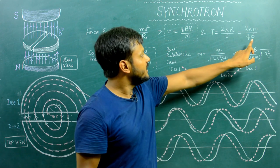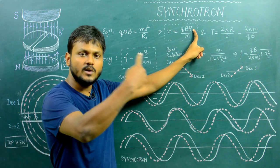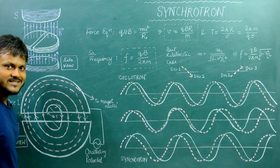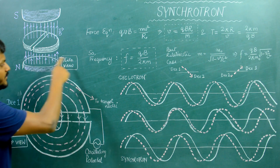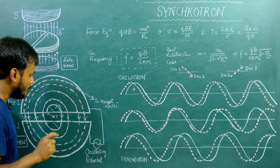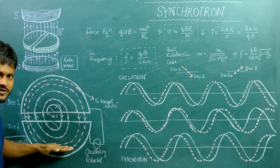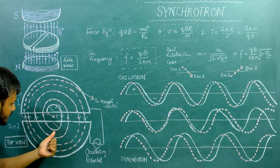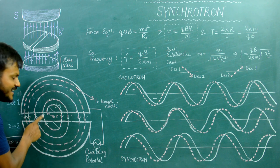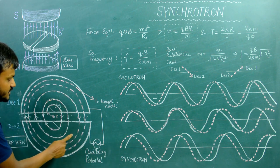The time period of revolution is a constant, depending only on the magnetic field, charge, and mass of the particle. As velocity increases, the radius of revolution also increases — this is why the particle's path spirals outward over many revolutions rather than tracing a single circle. As the particle enters D2, the oscillating potential reverses direction so D2 is now positive and D1 is negative. The particle exiting D2 then experiences an electric field accelerating it toward D1, gaining velocity once again.